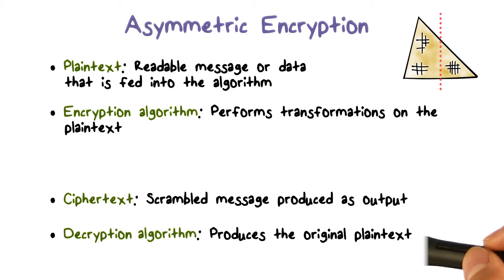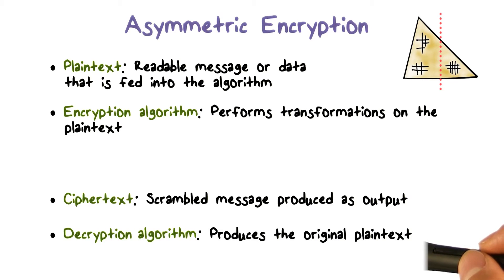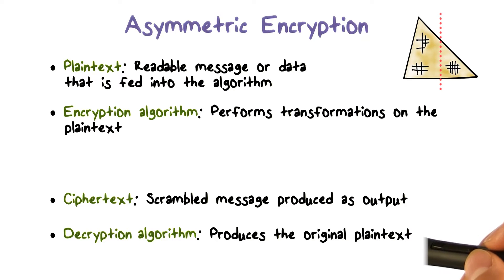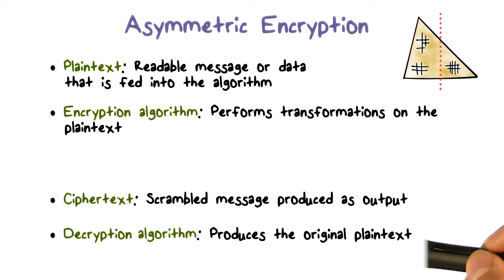Given a plaintext input, the encryption algorithm performs a transformation to produce the corresponding ciphertext. The decryption algorithm reverses the encryption process — that is, it takes as input the ciphertext and produces the original plaintext.